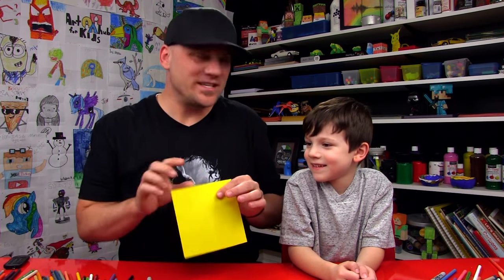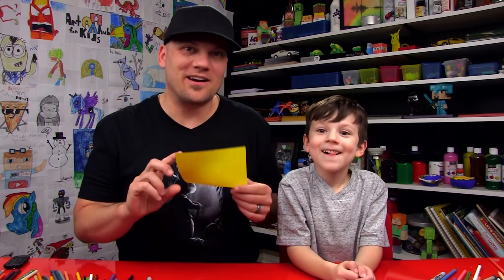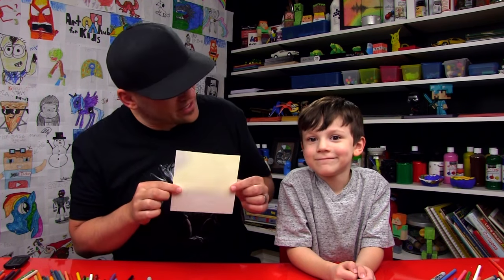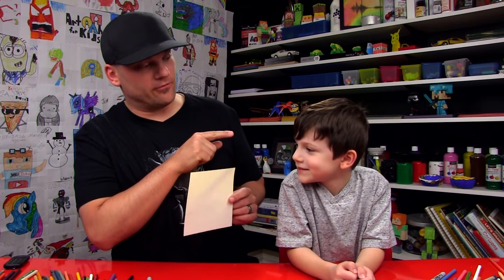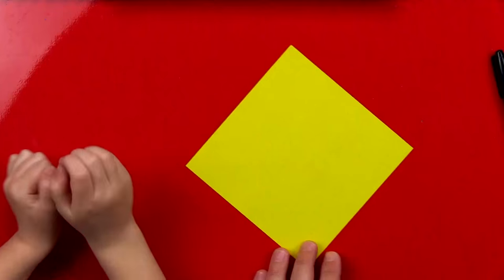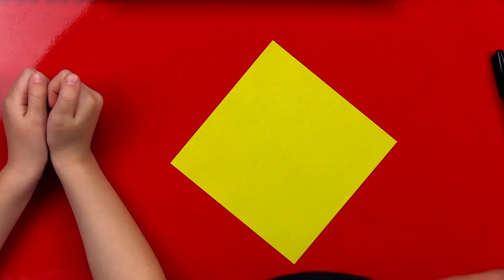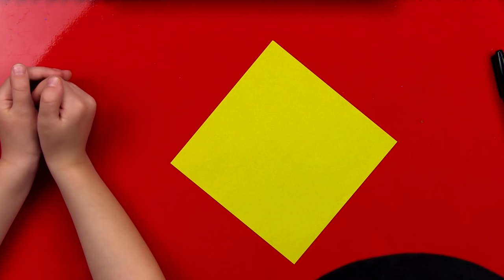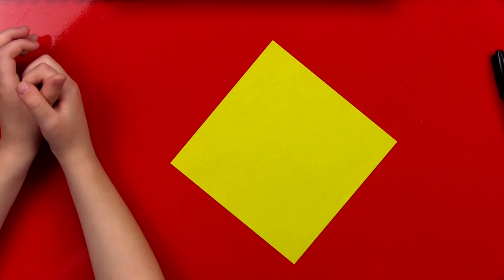So you need a yellow piece of paper. We're using origami paper, so it's already square, and on one side it's yellow and on the other side it's white. You ready to fold this? Yeah! Alright, let's do it. How old are you? Five! You're five years old, so we're gonna do this together.